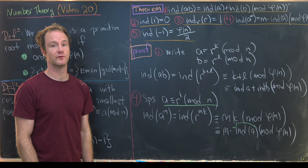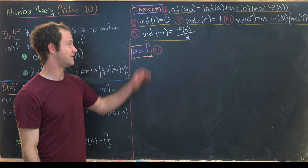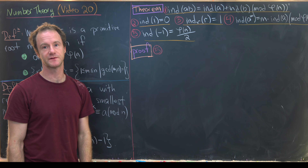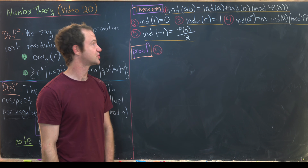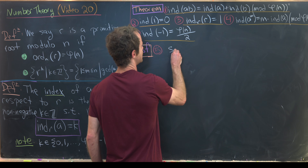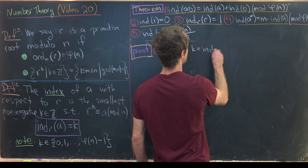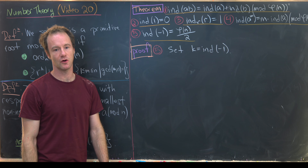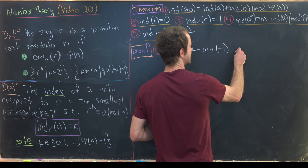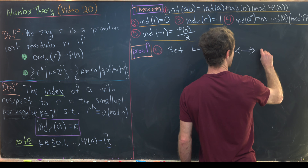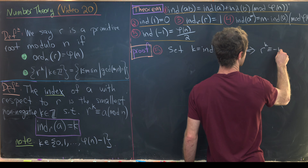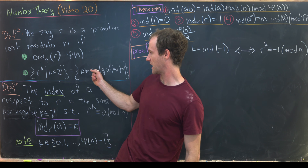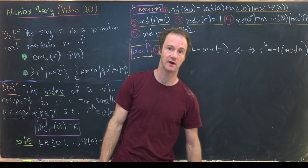Now let's prove property 5, which is the trickiest. Set k = ind_r(−1), so we want to show k = φ(n)/2. By definition, k is the least non-negative integer such that r^k ≡ −1 mod n.